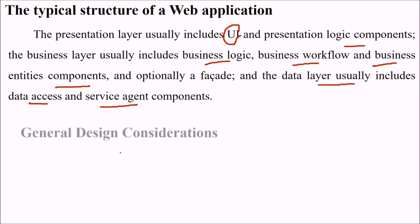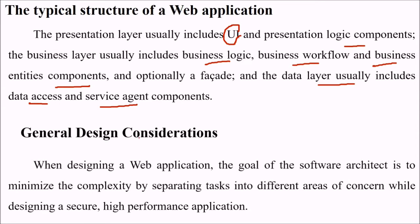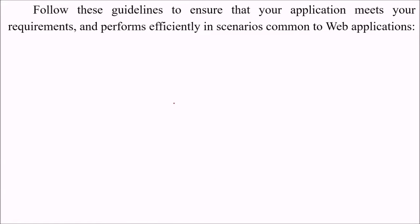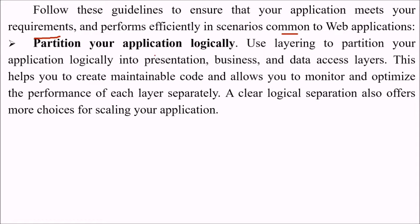There are general design considerations when designing a web application. The goal of software architecture is to minimize complexity by separating tasks into different areas of concern, ensuring a secure and high-performance web application. We need to follow certain guidelines so our application meets requirements and performs efficiently in scenarios common to web applications. We should partition the application logically, using layering to divide it into presentation, business, and data access layers.